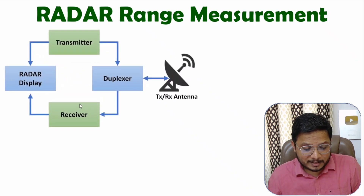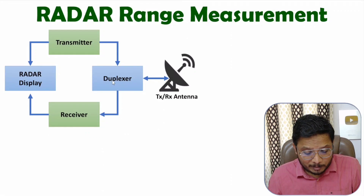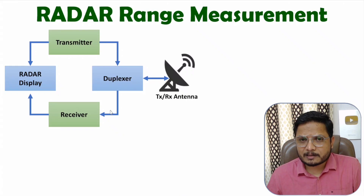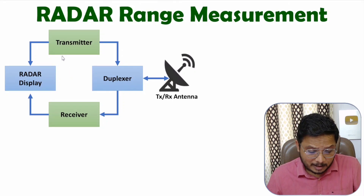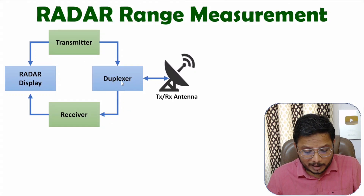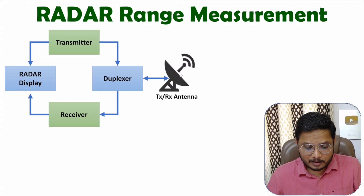In my earlier videos I explained the monostatic radar system. In a monostatic radar system we have one antenna connected with a duplexer, and the duplexer is connected with the transmitter and receiver. With a radar system there are three major elements: transmitter, receiver, and antenna. The duplexer separates transmitter and receiver, so we need only one antenna.